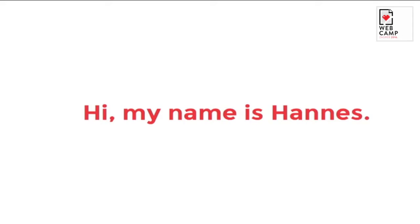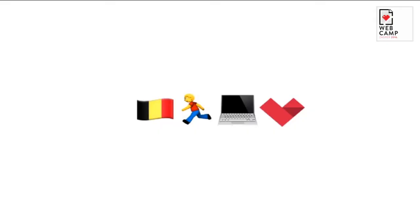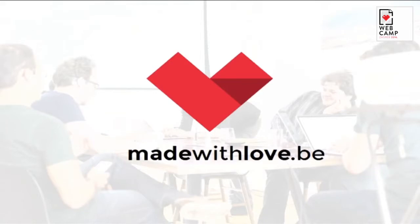My name is Hannes van de Vreken. You introduced me very well — it's one of the best pronunciations of my name so far. I can describe myself with four emoji characters. I'm a Belgian, I like to run, also cycling and swimming. I like to work with computers. I work for a company called madewithlove.be. We have a lot of remote employees — no one in Croatia so far, so maybe you should apply. We make things with love using PHP and JavaScript.